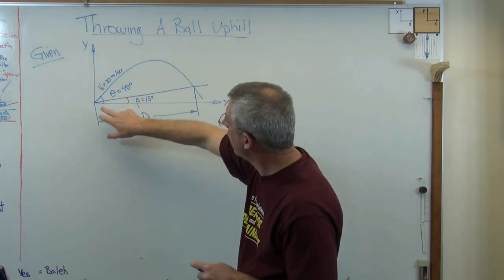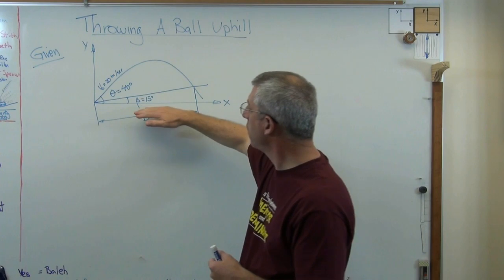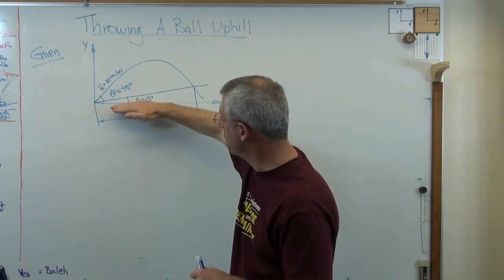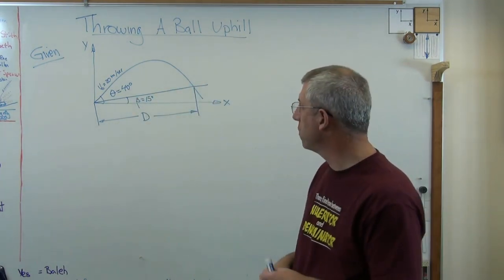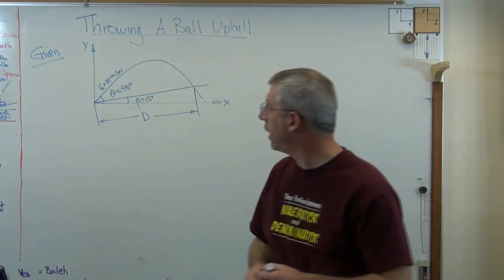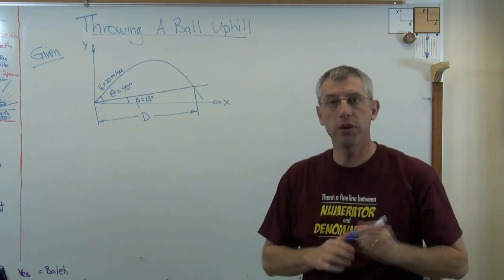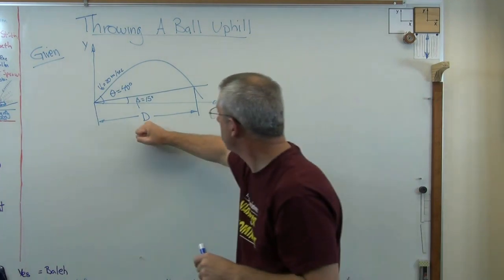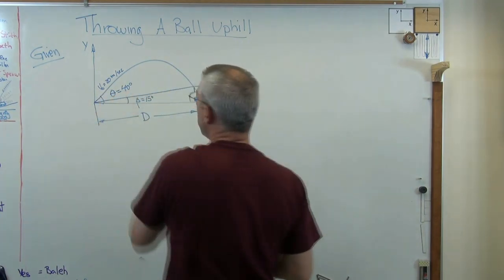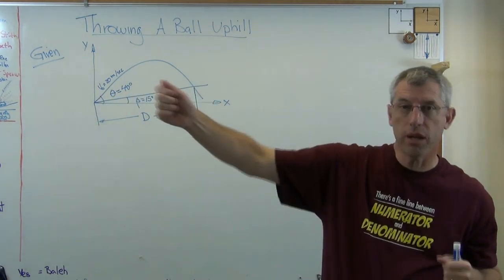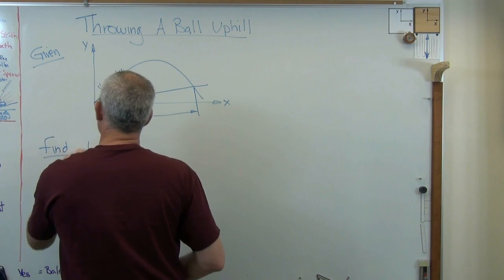The initial launch angle of the ball — maybe if we throw it or hit it with something — is 40 degrees from the horizontal. That's important: not from the hill angle, but from the horizontal. The hill is flat and has a 15-degree slope. The initial launch velocity is 20 meters per second. All those things are given, and what I want us to calculate is the distance d up the hill. D is not calculated horizontally; d is calculated up the hill — so if you actually laid a tape measure up that hill, what would d be?